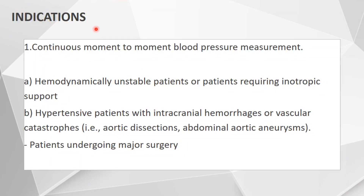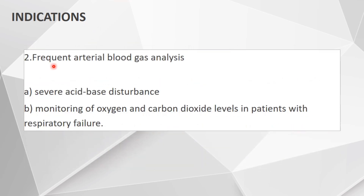Coming to the indications. The main use of arterial line insertion is for continuous moment-to-moment blood pressure measurement. This is mainly done for hemodynamically unstable patients or patients requiring inotropic support, any hypertensive patients with intracranial hemorrhages, aortic disruptions, abdominal aortic aneurysms, or patients undergoing major surgery for continuous BP monitoring. It is also used for frequent ABG analysis, as in severe acid-base disturbance, or monitoring of oxygen and carbon dioxide levels in patients with respiratory failure.